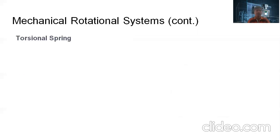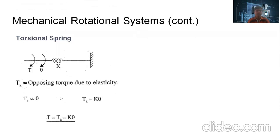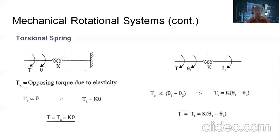The third basic element is the torsional spring. This is the basic model of the torsional spring with one end fixed. When the torque T is applied on the spring, the opposing torque due to elasticity is directly proportional to the angular displacement theta. Therefore, TK = K · θ, and by the torque balance equation, T = TK = K · θ. When both ends of the spring are free, the opposing torque TK is directly proportional to the differential angular displacement, giving TK = K(θ1 − θ2) and T = TK = K(θ1 − θ2).